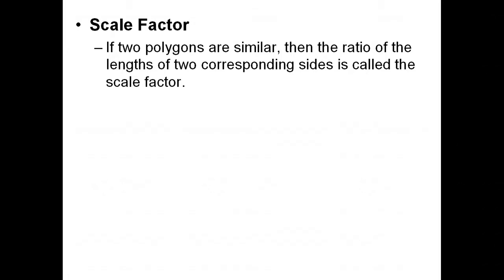Scale factor. What we're talking about here is we're taking a figure, whether it's a triangle or a quadrilateral or anything else, and having something that looks just like it, only a different size. What we multiply in order to get that new size is considered to be the scale factor. If two polygons are similar, then the ratio of the length of the two corresponding sides is what we call that scale factor. So in example one, the scale factor was five to three, because that was the ratio of all the corresponding sides.